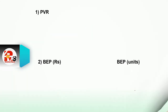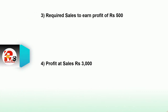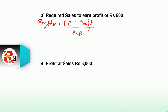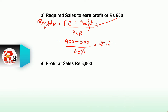BEP in rupees and units are calculated. Now, required sales to earn a profit of rupees 500. The required sales formula is: fixed cost plus profit divided by PVR. Fixed cost is 400, profit is 500, PVR is 40%. So (400 + 500) divided by 40% = rupees 2250. This is your required sales.